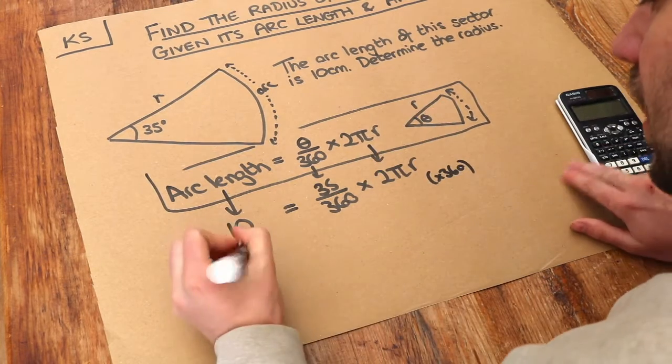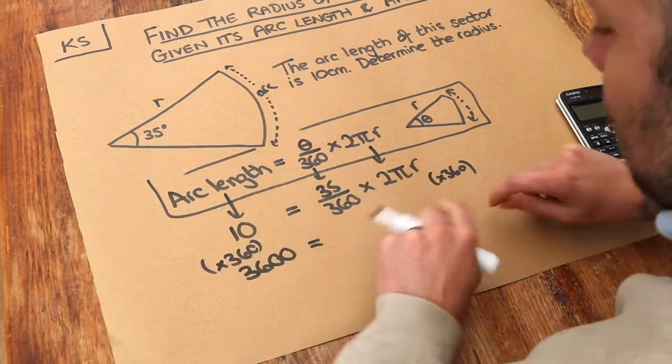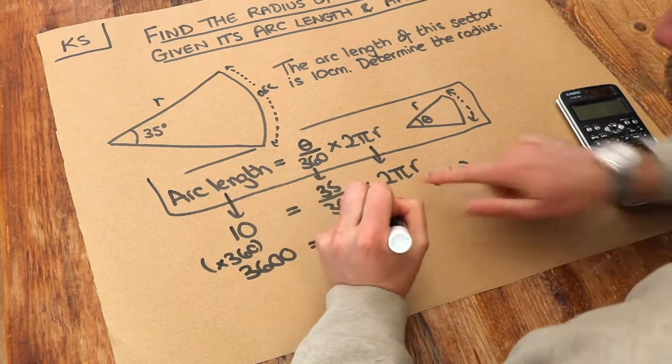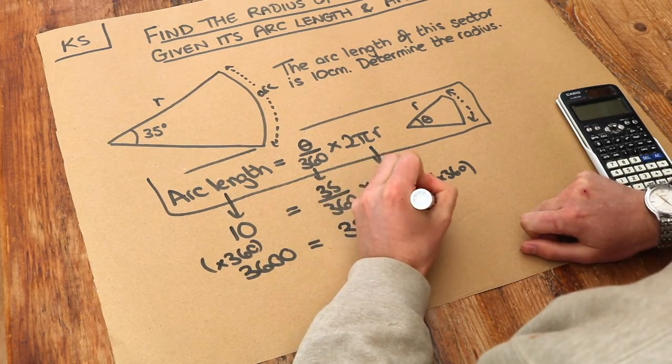10 times 360 is 3600. Multiplying by 360 gets rid of that over 360, leaving 35. You don't want to times this by 360 as well - that just stays as 2πr. So this is a bit simpler now.